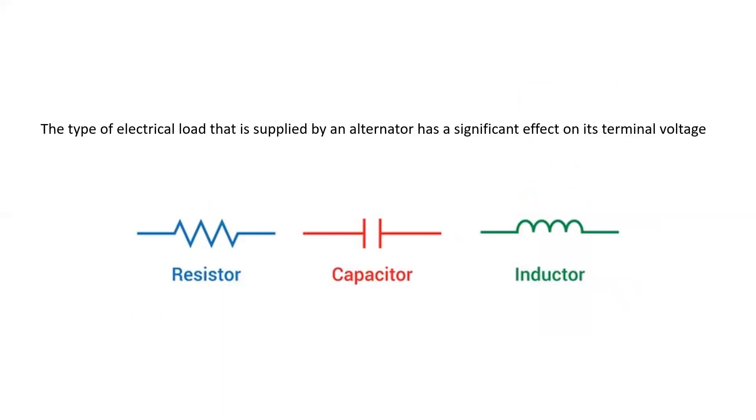The type of electrical load that is supplied by an alternator has a significant effect on its terminal voltage. And by type, I mean resistor, capacitor, or inductor.